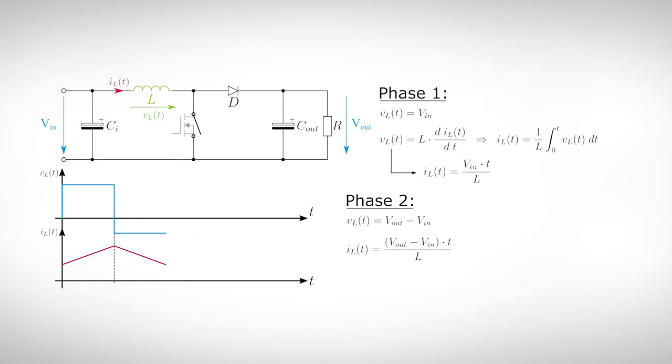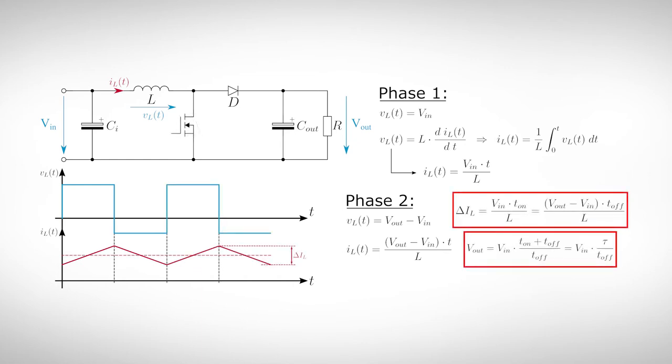If we switch off the transistor, the inductor will drive the current into the same direction, but the voltage across the inductor will change its polarity. Now the inductor voltage is in series with the input voltage and that's the trick how we can increase the output voltage. The diode is now in forward direction and the stored energy of the inductor can flow into the output capacitor. During the off time, the current of the inductor will again fall linearly. Seen from the view of the inductor, not much has changed compared to the step-down converter.